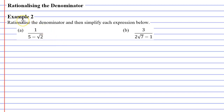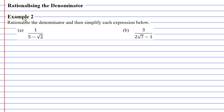In this video, we're going to complete example two and learn how to rationalize the denominator for each question below. On this slide, you can only see questions A and B; on the next slide, we'll also go over questions C and D. In the previous video, we completed example one. Example two is going to be much harder because this time our denominator has two terms as opposed to one.